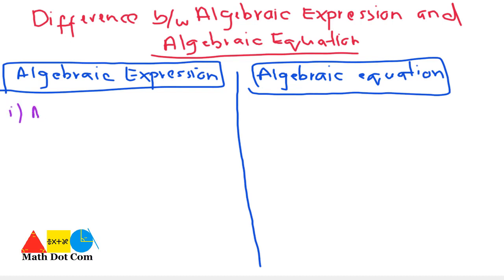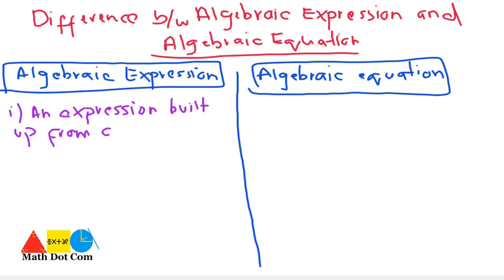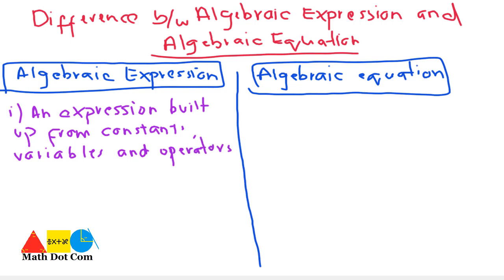For the sake of revision, we will again define an algebraic expression. An algebraic expression is built up from constants, variables, and algebraic operators such as plus, minus, and multiplication.